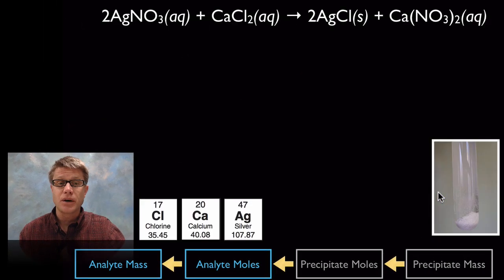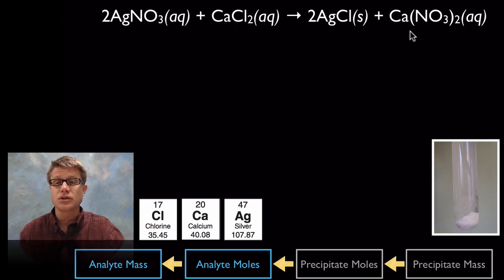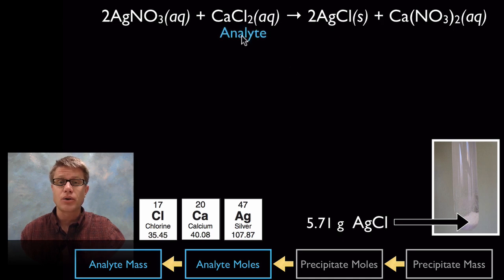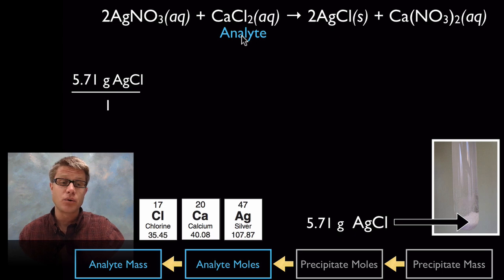Let's go through a sample problem of gravimetric analysis. We've got silver nitrate in solution, we're going to combine that with calcium chloride also in solution, and what we get is a solid silver chloride precipitate, plus a calcium nitrate solution. So let's say the mass of the silver chloride is 5.71 grams. Now let's work backwards across this flow chart and figure out the mass of the analyte — calcium chloride.